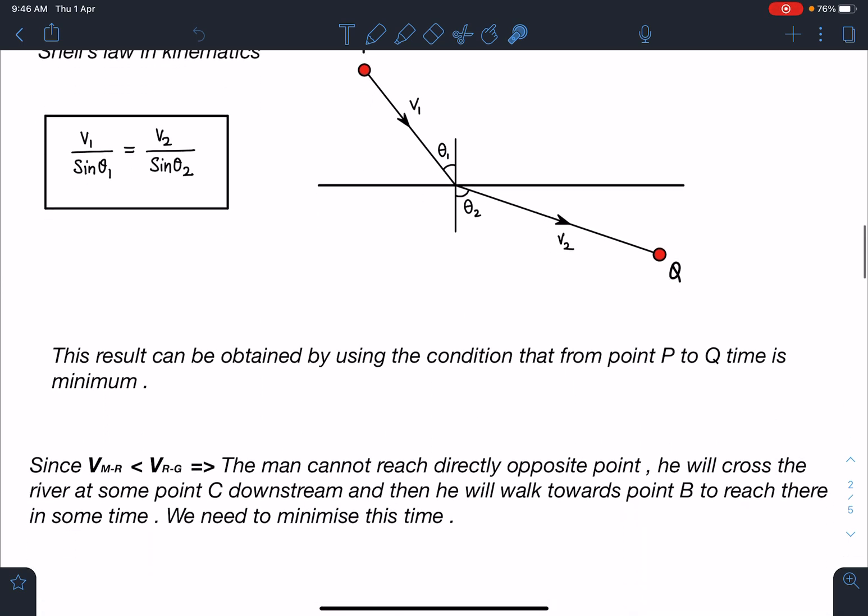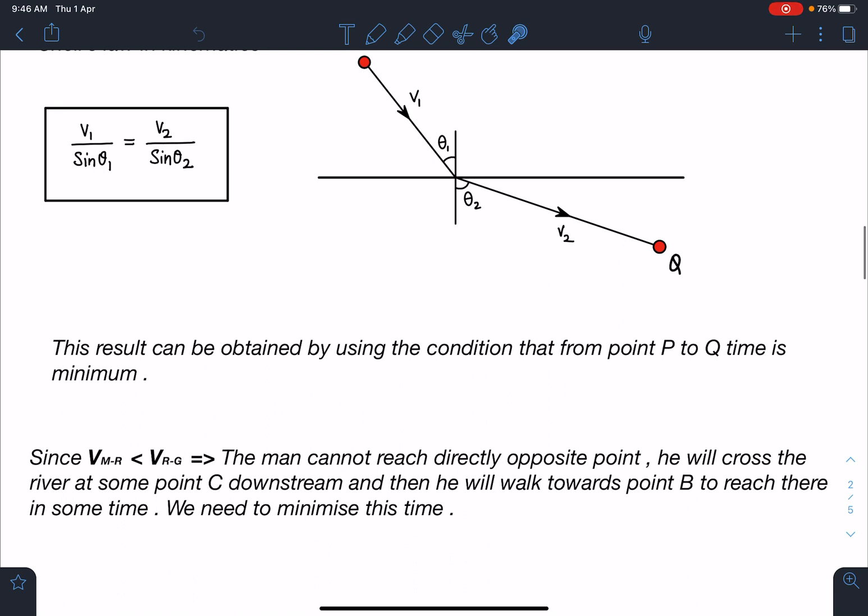And also the second thing which you'll notice about this point is V_{MR} which is less than V_{RG}. So man cannot reach directly opposite point. He will cross the river at some point C downstream and then he will walk towards the point B to reach there in some time. We need to minimize this time. So guys, there is a standard method of solving this problem.